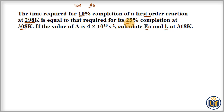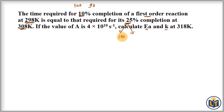For the second condition at 308 K, 25% of the reaction gets completed. So the initial amount is 100 and the remaining amount is 100 minus 25 = 75. Now we apply the formula for first order reaction.